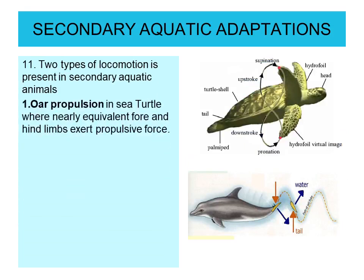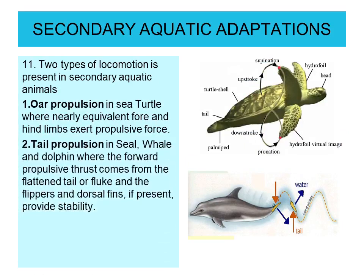Two types of locomotion are present in secondary aquatic animals. First is oar propulsion, as in sea turtles, where nearly equivalent fore and hind limbs exert propulsive forces to and fro. Second is tail propulsion, as in seals, whales, and dolphins, where the forward propulsive thrust comes from the flattened tail or fluke, and the flippers and dorsal fin — if present — provide stability.